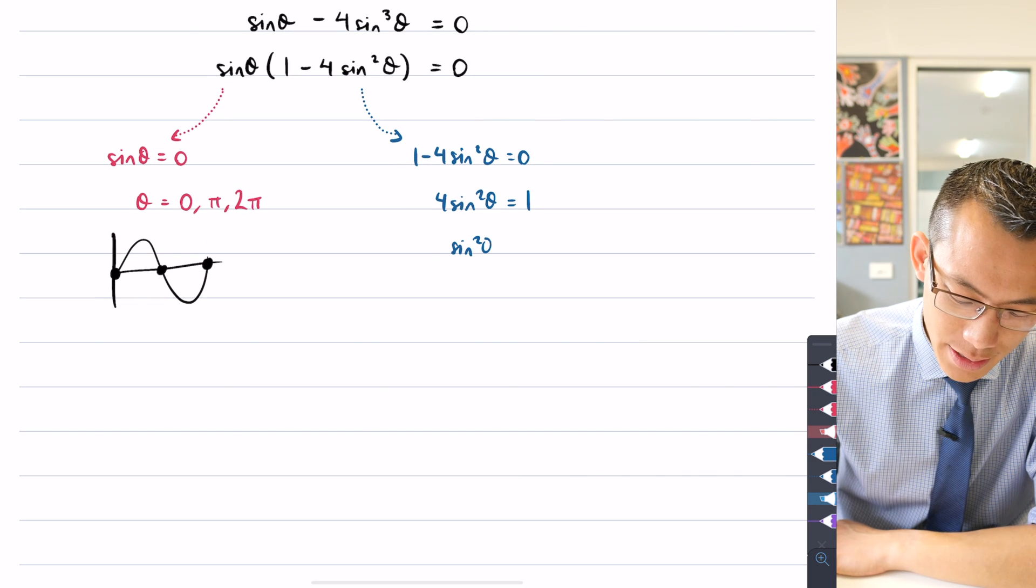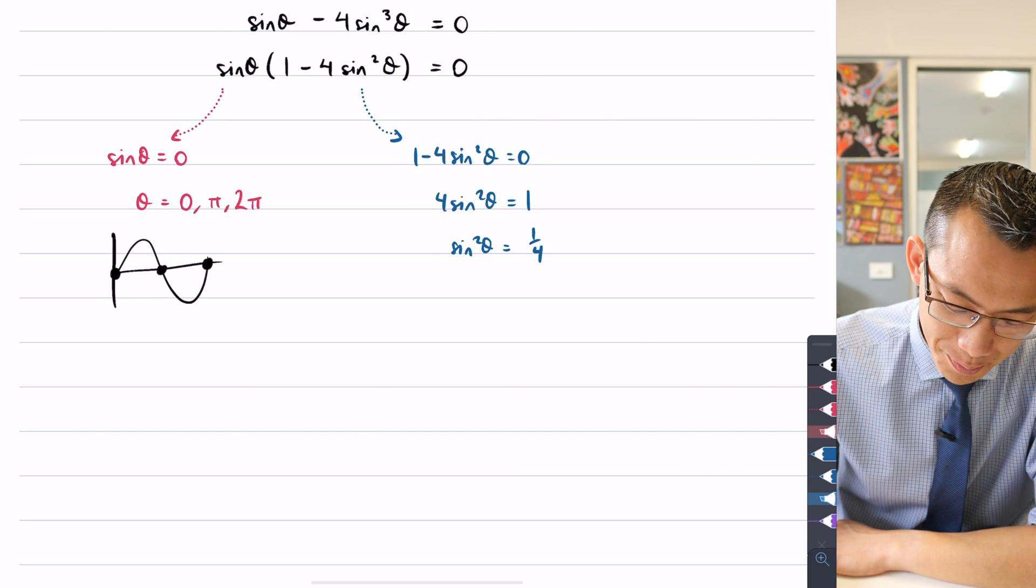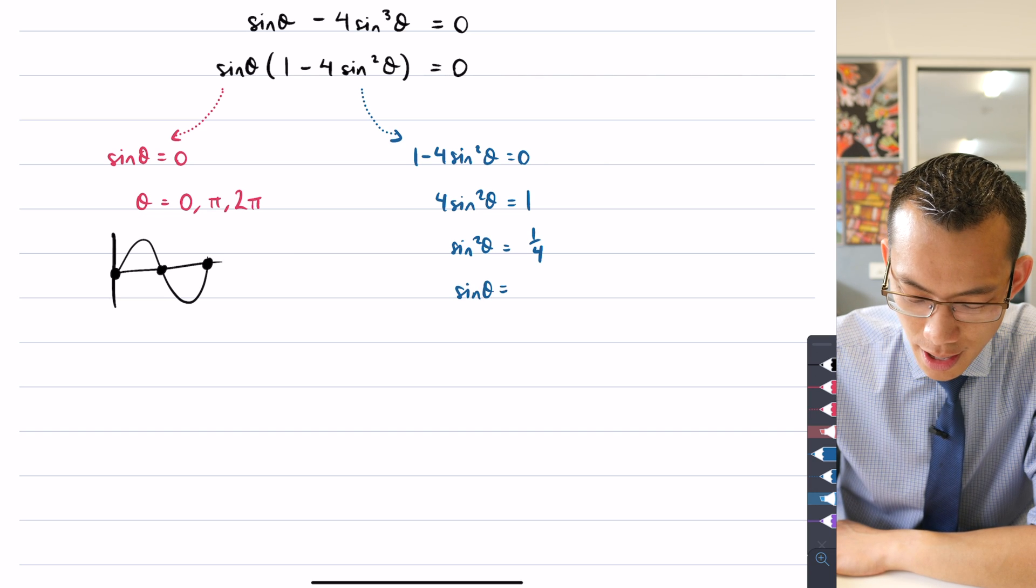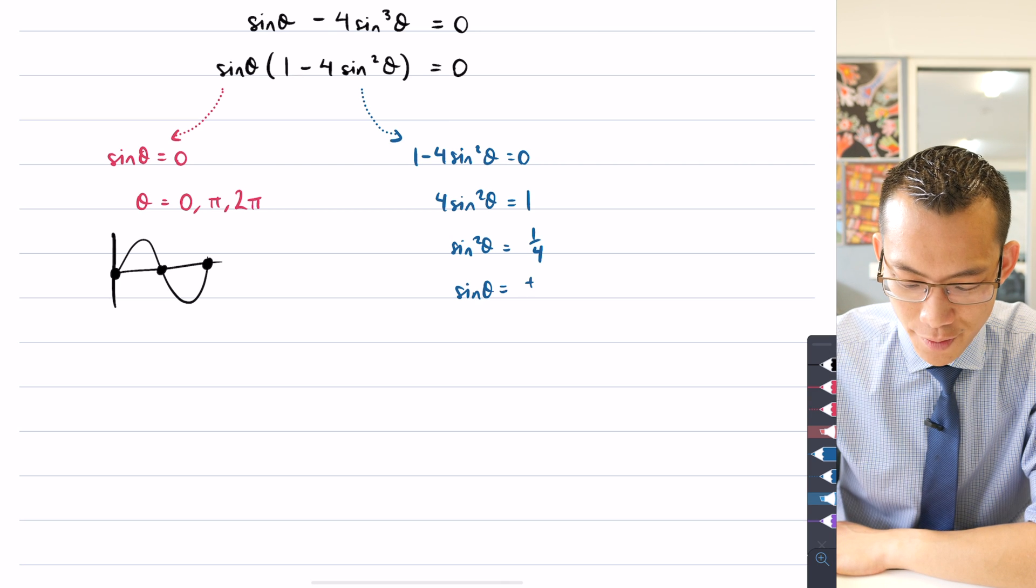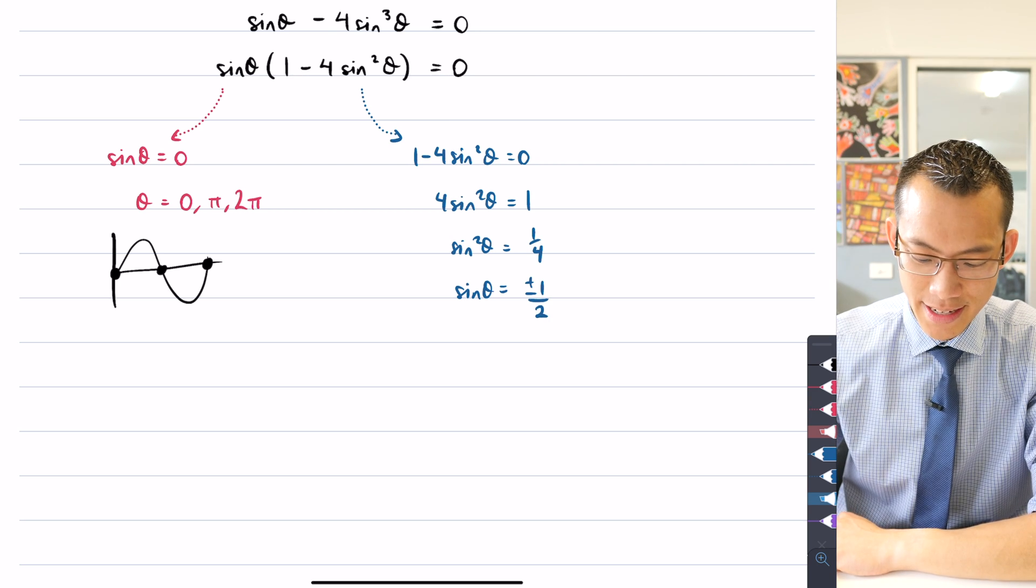I'll now divide both sides by 4, which gives me that. And a quarter is just the square of a half.